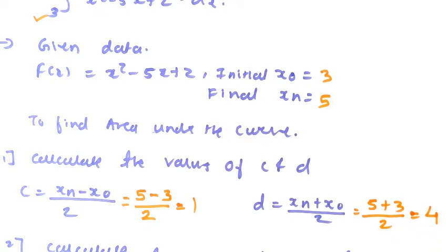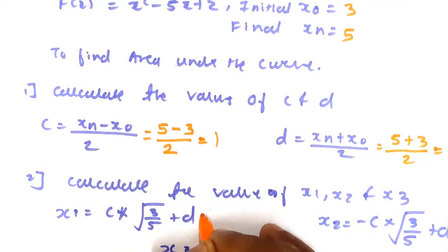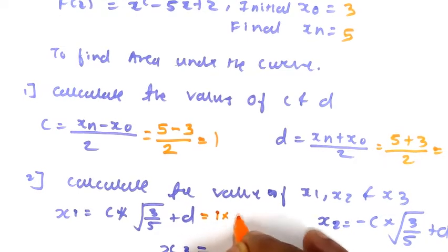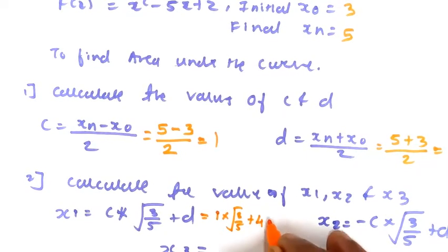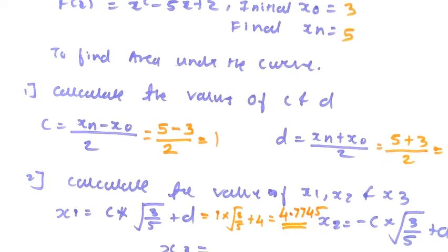The next step is to find the values of x1, x2, and x3 using c and d. For x1, the formula is x1 = c × √(3/5) + d. Putting in c = 1 and d = 4, we get 1 × √(3/5) + 4, which simplifies to 4.7745.